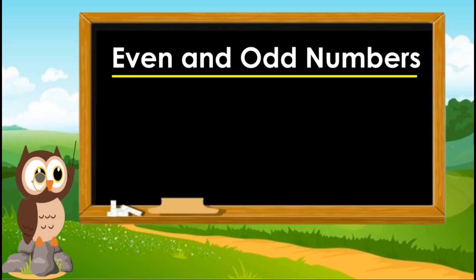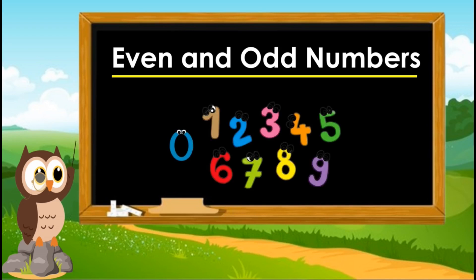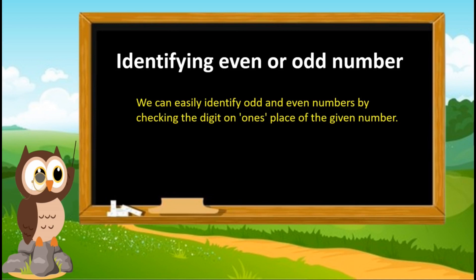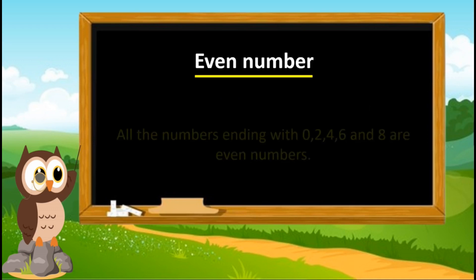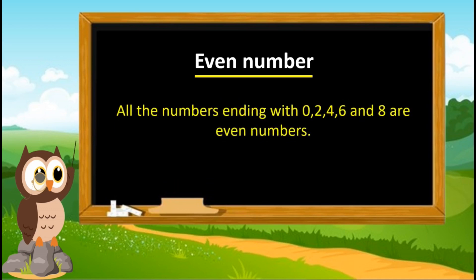Hello everyone, today we will learn even and odd numbers. We can easily identify odd and even numbers by checking the digit on one's place of the given number. All the numbers ending with zero, two, four, six, and eight are even numbers.